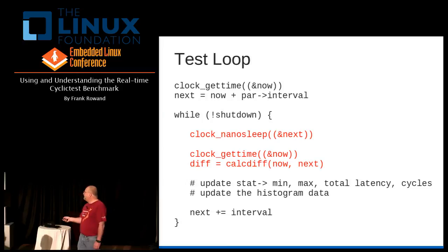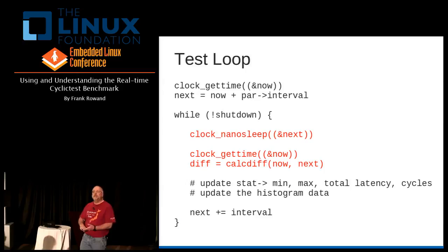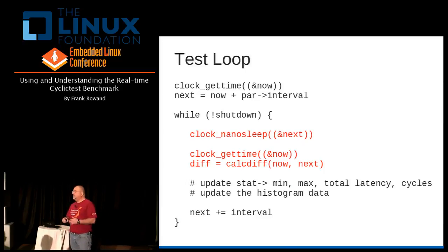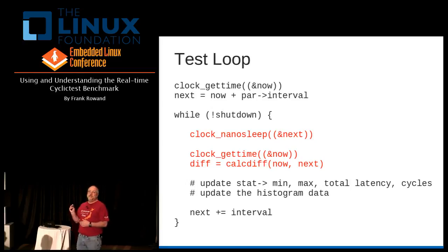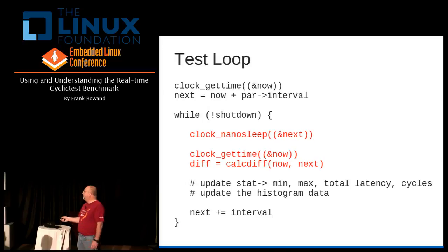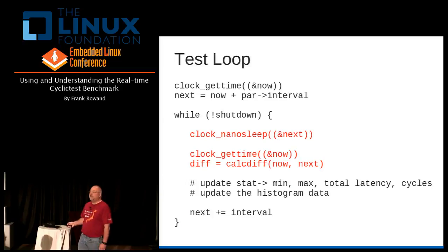The next thing we do in our loop is update all our statistics. We have a new smallest value for minimum, a new largest value for maximum. We want to collect total latency so we can calculate averages. We might keep data for each event or put it in bins for histogram data. Then we say the next time we want to wake up is incremented by our interval, and we just spin in this loop collecting data.